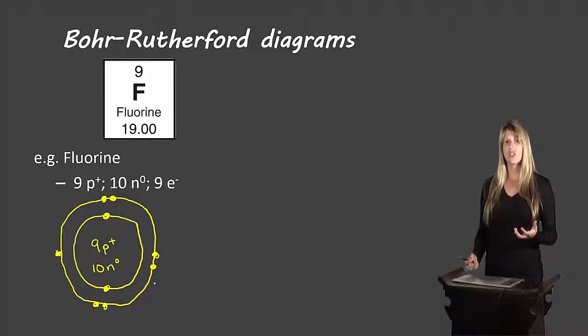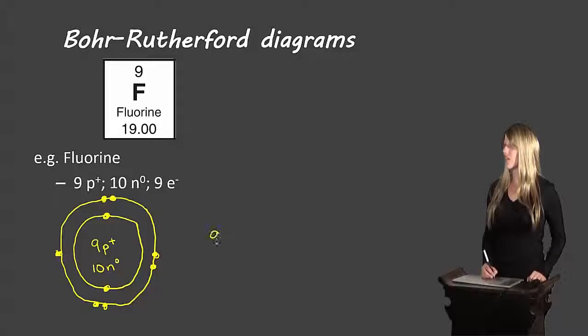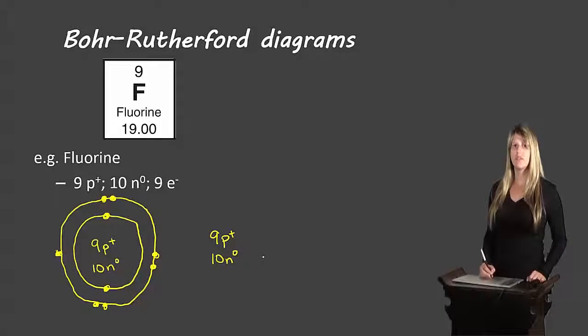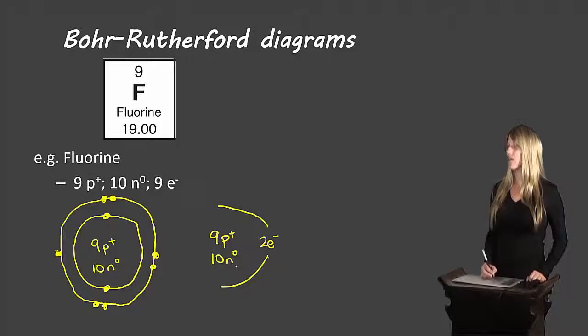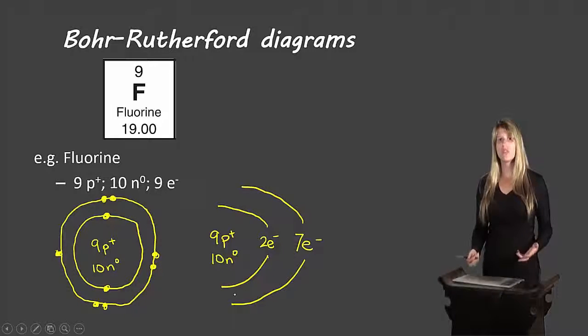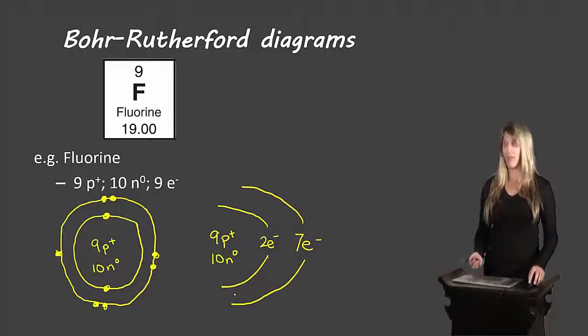There's a second way which is a little bit faster. We start off the same by drawing the nine protons and 10 neutrons in the middle. Now we know there are two electrons that will fit in the first shell. So we write two electrons and then draw sort of a half shell. So we've combined both of those instead of drawing the dots to represent the electrons. There were seven electrons that fit in the second shell. So we'll write seven electrons and then draw that shell there. So both of these are possibilities. Use whichever one you like best.